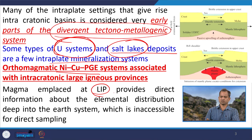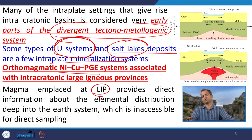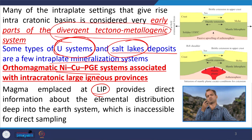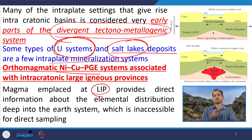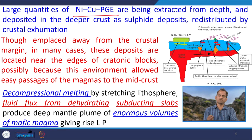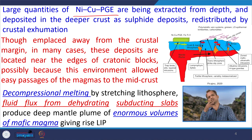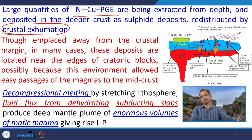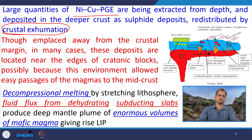Magma emplaced at large igneous provinces provides direct information about the elemental distribution at the subsurface, because magma generating from different levels is taking different elements through it. We do not know exactly what the elemental distribution and fashion of distribution from top to bottom is. Once this magma comes to the surface, it gives direct evidence of what elements are distributed and what the compositional stratigraphy of the region is. Large quantities of nickel, copper, and PGE are extracted from the depth and deposited at the deeper crust, and those deeper crust deposits are coming to the surface due to crustal exhumation.